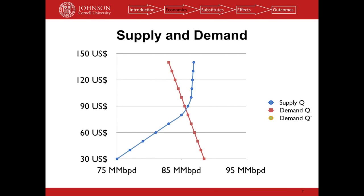In supply and demand terms, when you reach peak oil production, you have a kinked supply curve — essentially a ceiling of available supply that becomes extremely inelastic after a certain point. As demand shifts out — say as China or Asia increases demand and more people drive cars — you get into a very inelastic region where you get a price spike with very high prices, but without the corresponding increase in supply going to market.